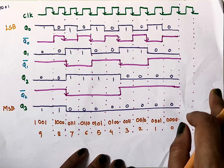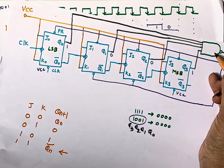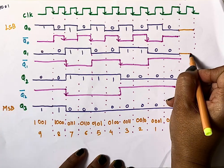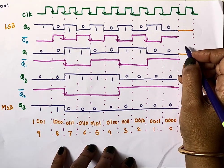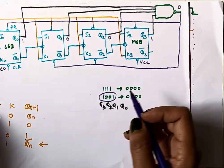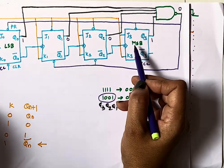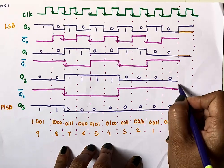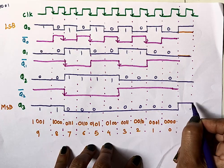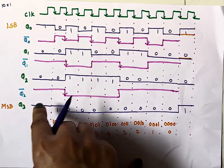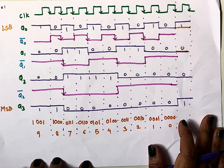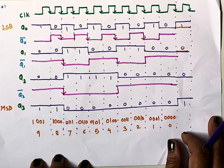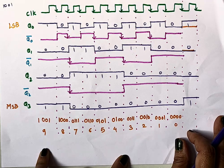After reaching 0, the counter naturally tries to go to 15 (1111). But because of the reset circuitry — with the NAND gate, preset of Q3 and Q0, and clear of Q1 and Q2 — the output immediately resets to 1001 (9). Since J and K are connected to VCC and Q-bar is connected to the clock input, the counter keeps repeating from 9 to 0 indefinitely.